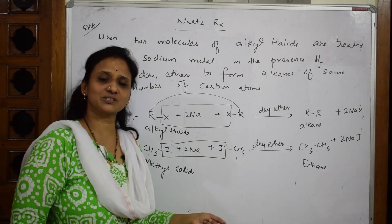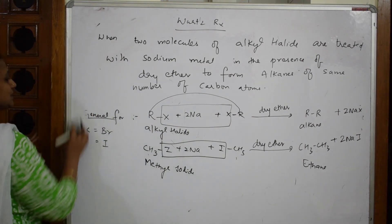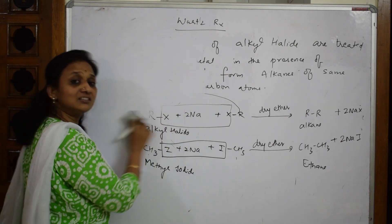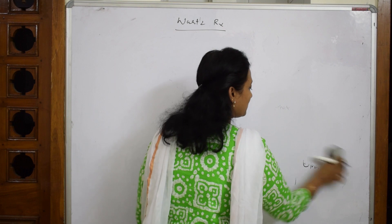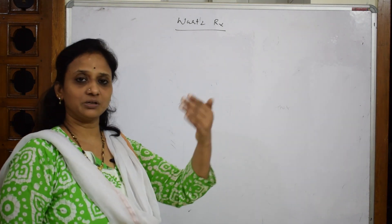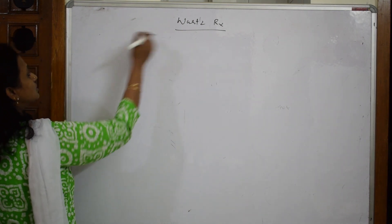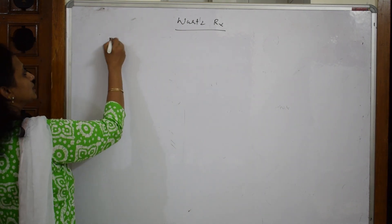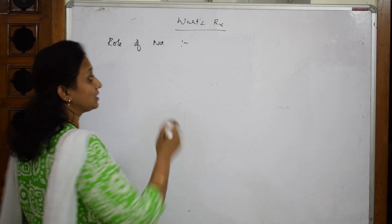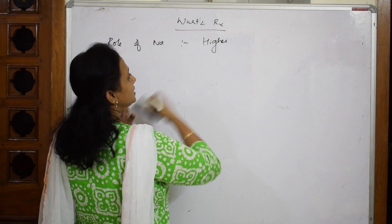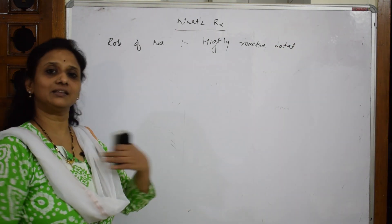Now we'll learn why sodium and dry ether are used. From the reactivity series studied in grade 10, metals are arranged by reactivity — sodium and potassium are highly reactive, while copper, silver, and platinum are at the bottom. The role of sodium in the Wurtz reaction: sodium is a highly reactive metal, and because of this reactivity, it can easily displace the halide from the alkyl halide.